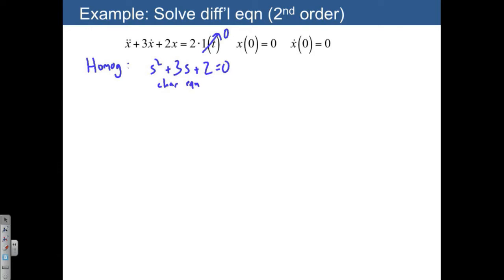You can use a quadratic formula or other methods. But I happen to already know that this factors into s plus 1 times s plus 2 is equal to 0, which means that s is equal to minus 1 and minus 2. There are two solutions.